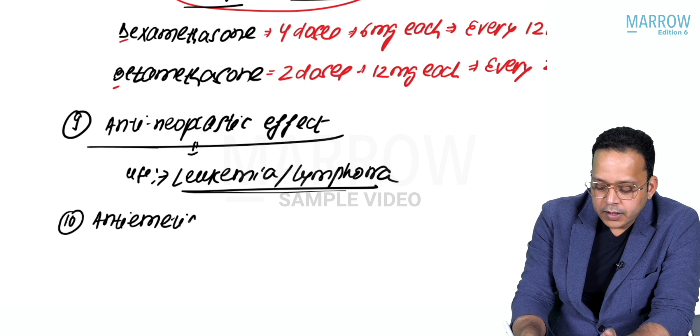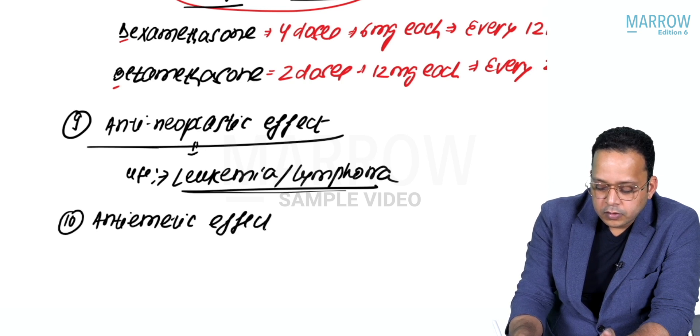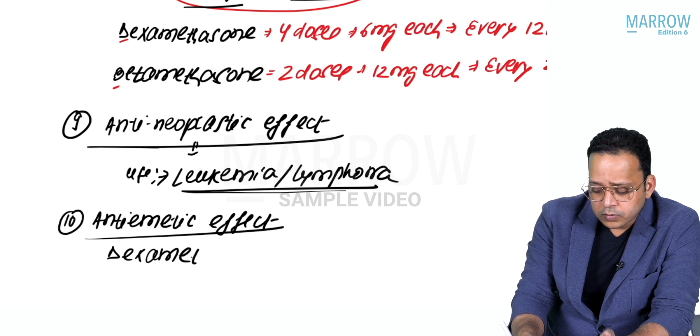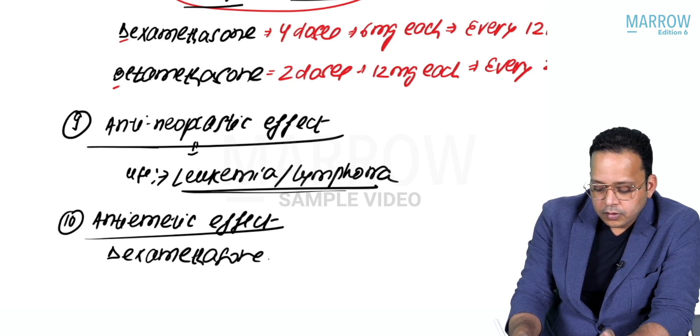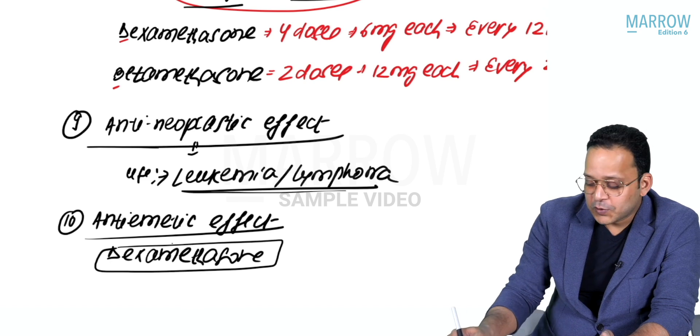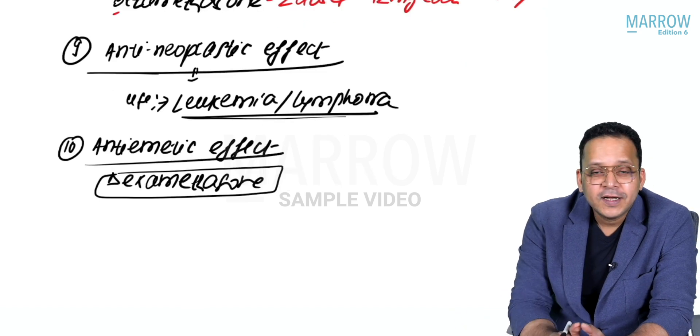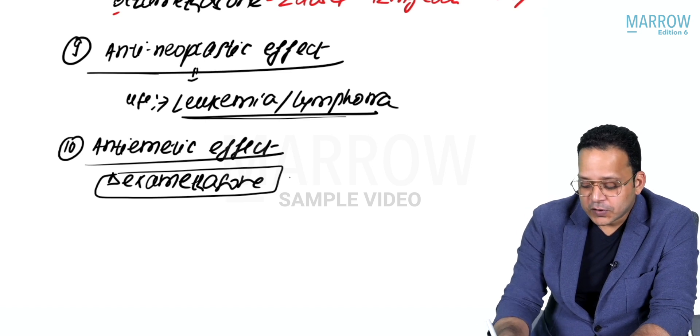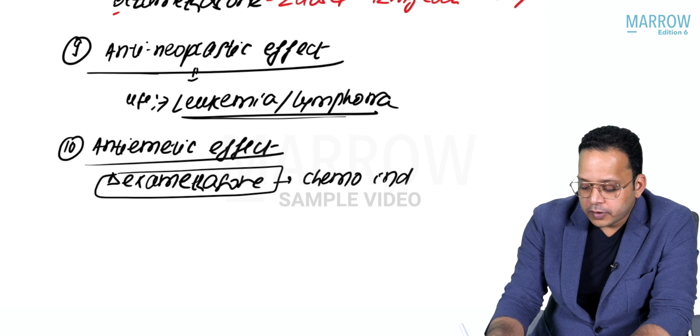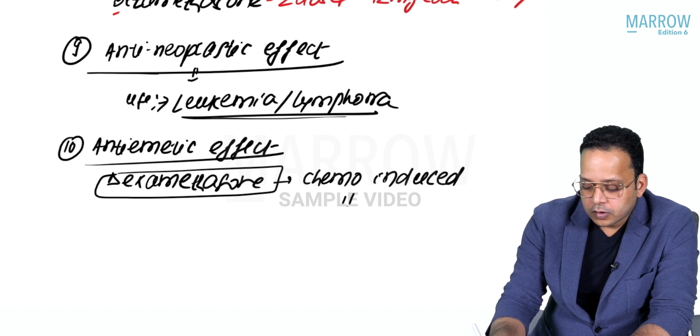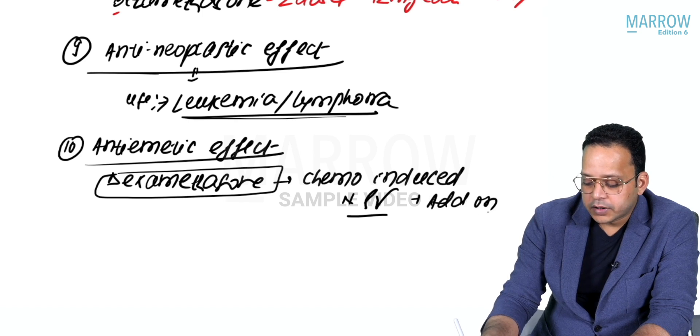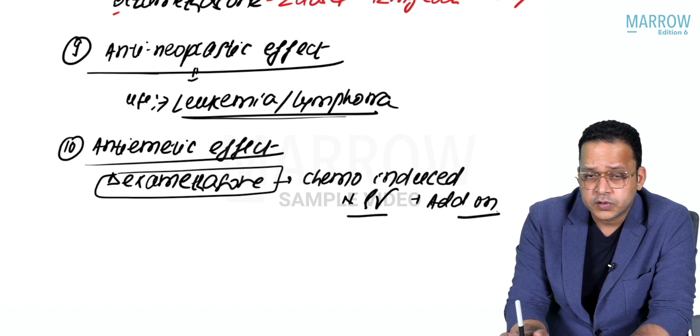They have anti-emetic effect as well. The mechanism is unknown. Dexamethasone can be used for treatment of chemo-induced nausea and vomiting, and its role is as add-on drug - it is not the drug of choice or first-line drug.